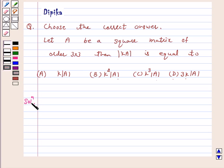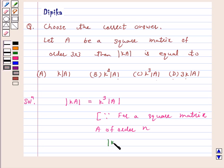Therefore, determinant of KA is equal to K cube into determinant of A, because we know that for a square matrix A of order N, determinant of KA is equal to K raise to power N into determinant of A.